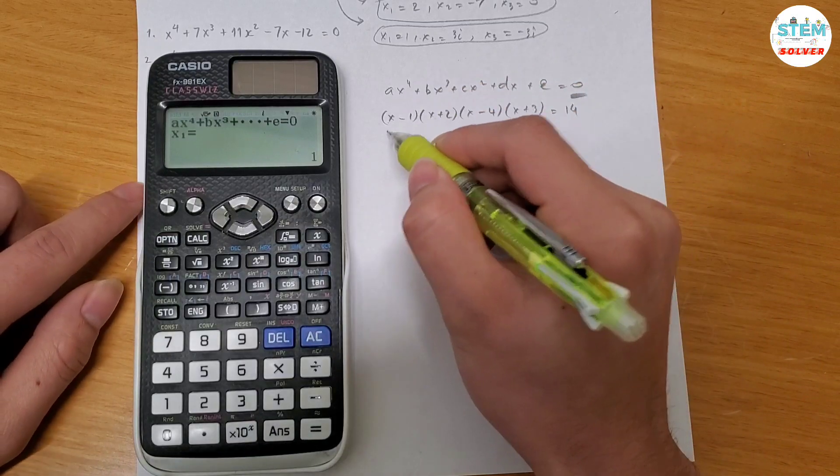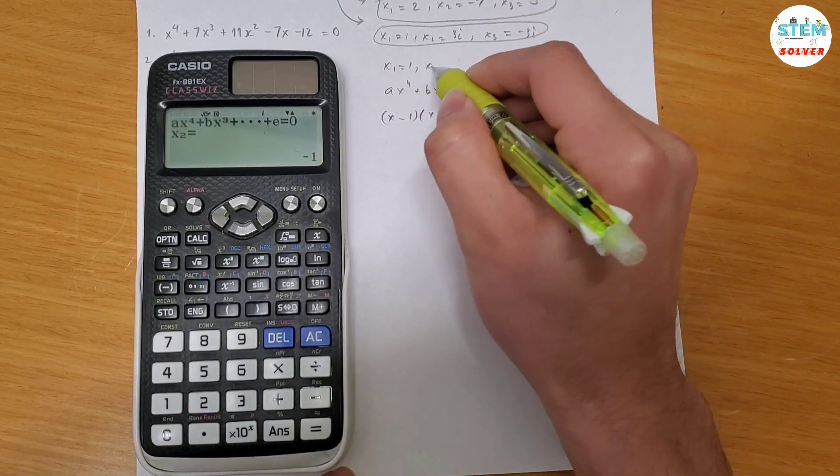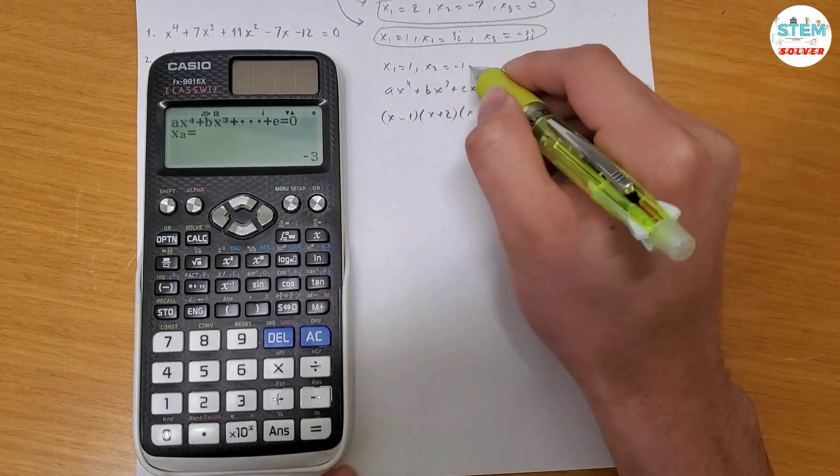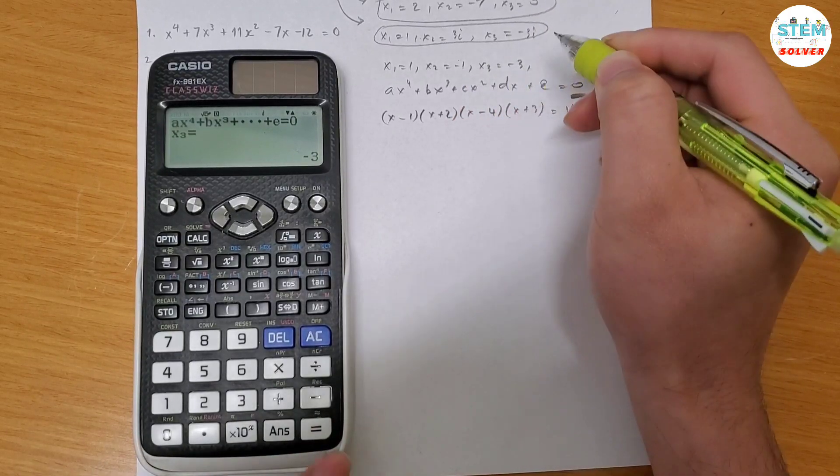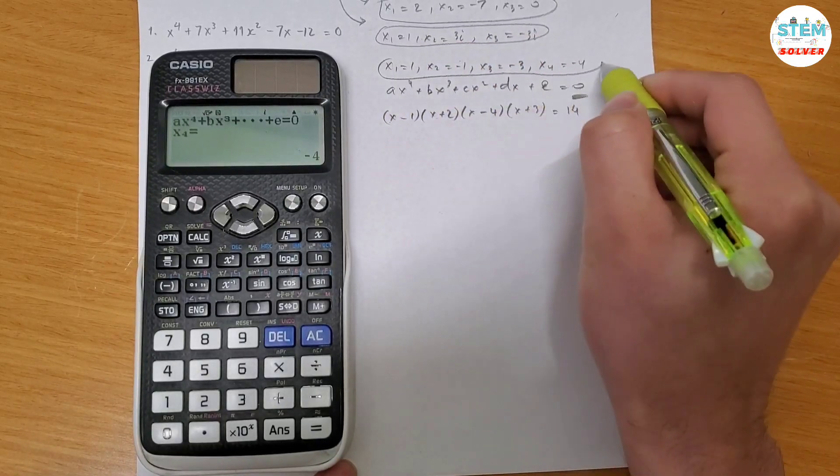Let's wait a little bit. Okay, so I got x1 equals 1, hit the equal sign again. x2 equals negative 1, hit the equal sign again. x3 equals negative 3 and then x4 equals negative 4. So here's all my 4 roots.